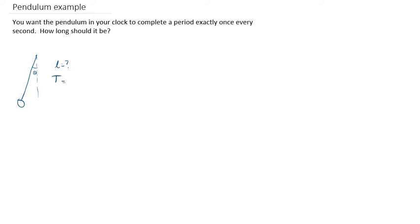We know that the period has to be one second. You might be thinking to yourself, how am I ever going to have enough information? I don't know how far the pendulum is being swung. I don't know the mass of the bob on the end. So how am I ever going to be able to figure out the length?